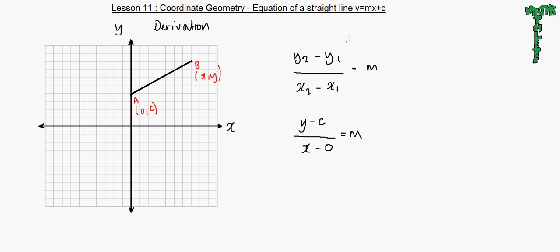So now what we're going to do here, as you can see, we're close. We can see the letters coming along. We have all the letters, we just need to do a bit of rearranging now. So x minus 0 just becomes x. So if we cross multiply the denominator with m, it becomes y minus c equals mx.